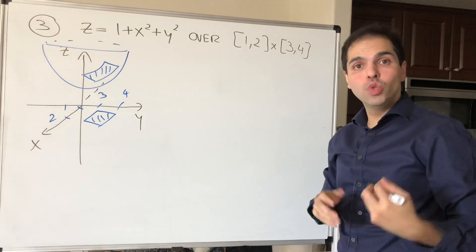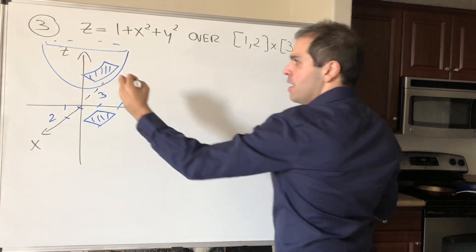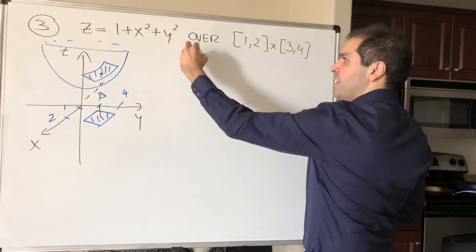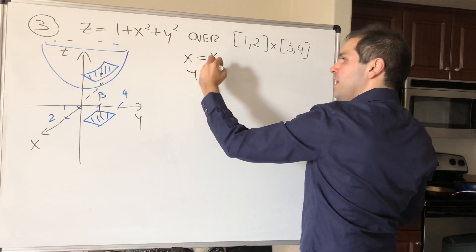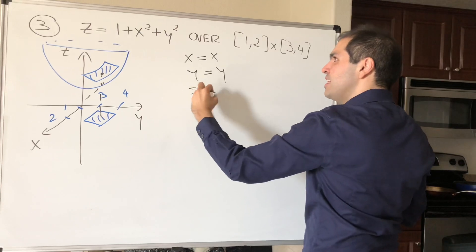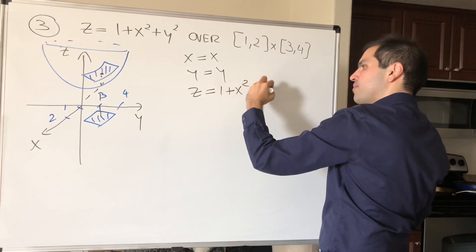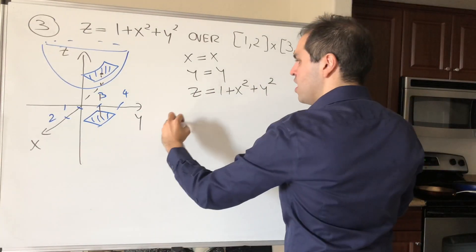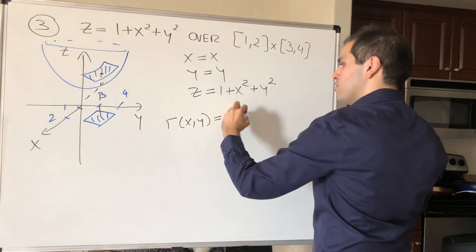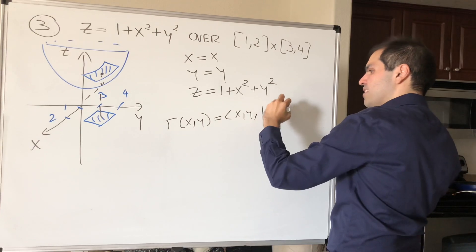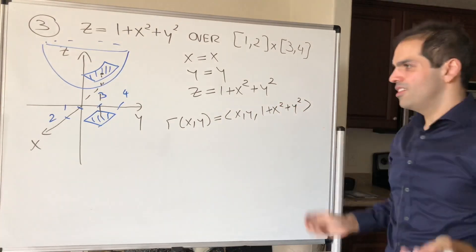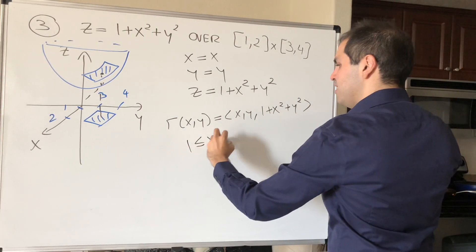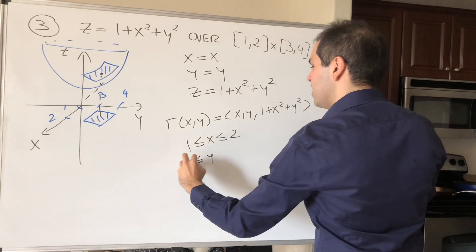And here's the cool thing. It's super easy to parametrize graphs of functions, because, well, we give you z in terms of x, so just let x be x, y be y, those are our two variables, and then z is in terms of x and y, which ultimately just gives you the following parametrization: r(x,y) is just x, y, and 1 plus x squared plus y squared. And remember, again, put the bounds for x and y, so x is between 1 and 2, and y is between 3 and 4.